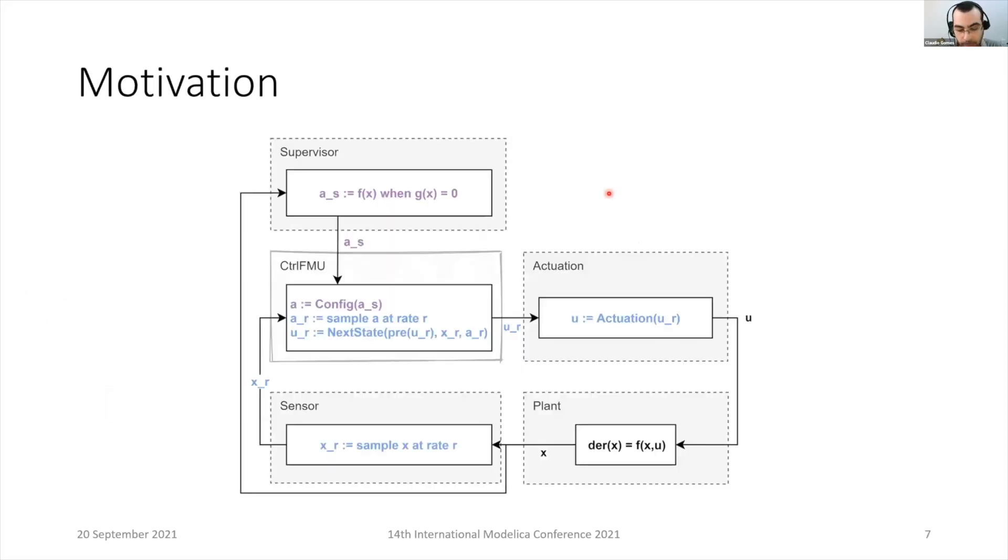First to start with some motivation, let's look at this abstract supervisory control scenario. Let's assume we have one FMU, which is a controller, and the rest are just sub models of our system. They don't have to be FMUs.